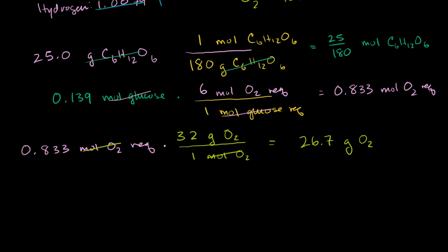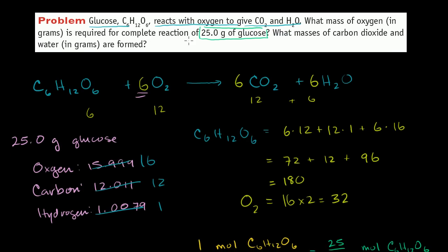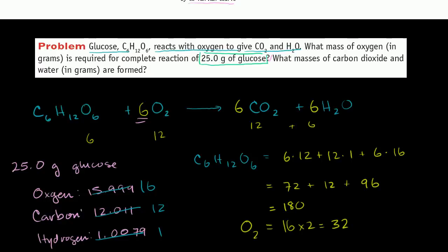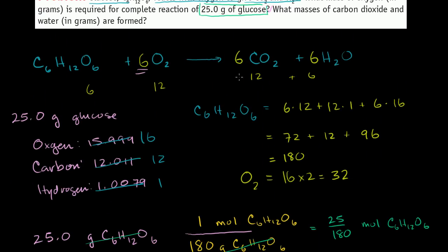We finished the first part — the mass of oxygen required. Now they also asked for the masses of carbon dioxide and water produced. We go back and note that we have 0.139 moles of glucose, so let's do carbon dioxide first.